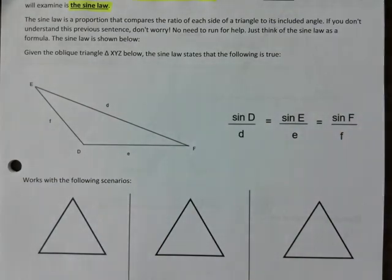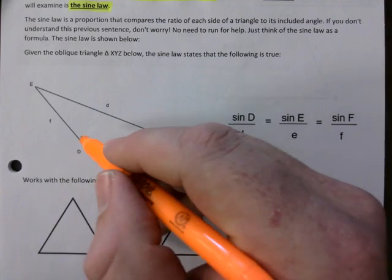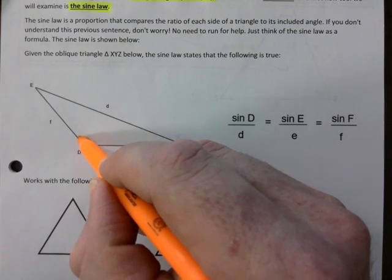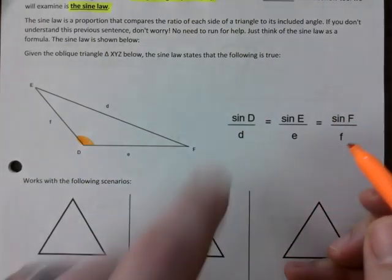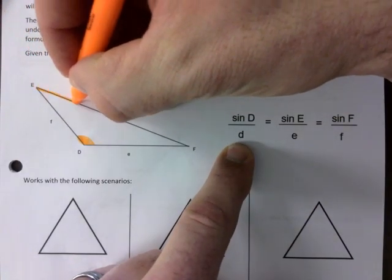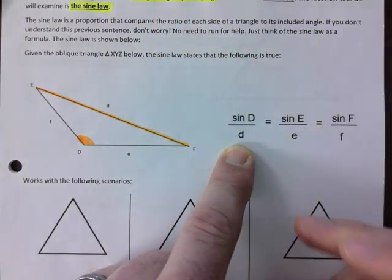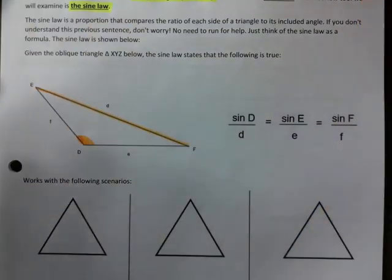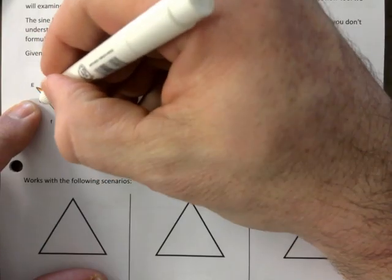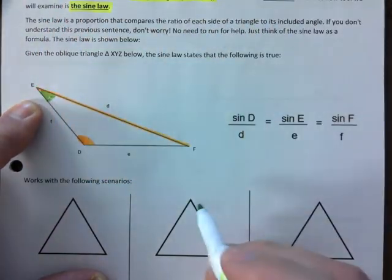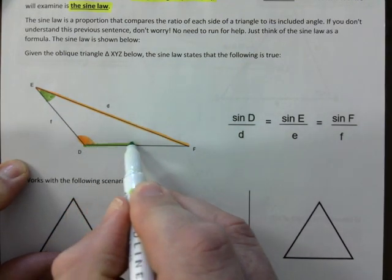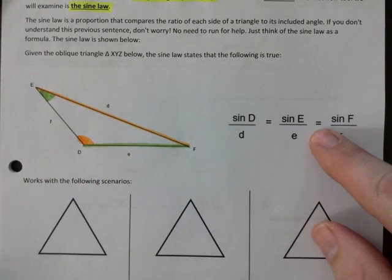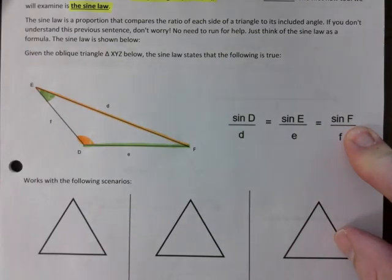Watch this. I'm going to use three different colors here. The sine law essentially states that if you were to take sine of angle D, like the sine of whatever this angle is, and you were to divide it by the side that's across from it, like this is what I call a pair. Sine law is all about pairing things up. That is a pair. That would be exactly equal to, I'm going to grab a different color here, sine of angle E, so that's this one here.